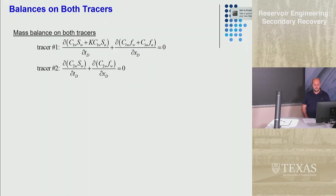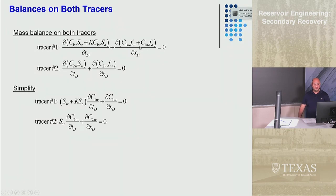We can simplify these. We know the fractional flow of water Fw is one and F0 is zero so that term goes away. This is just one. The coefficients over here we can pull out the SW times K times SO and you get this. We can remember that SW is one minus SOR and SO is equal to SOR.